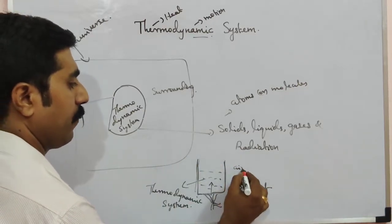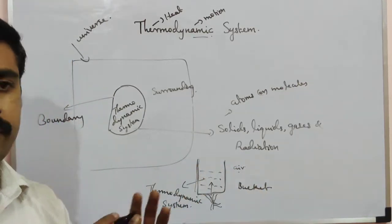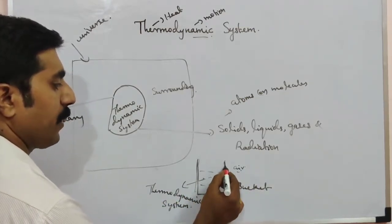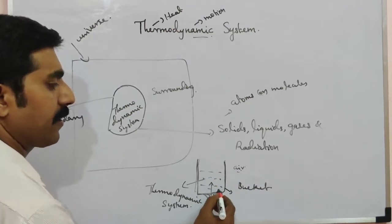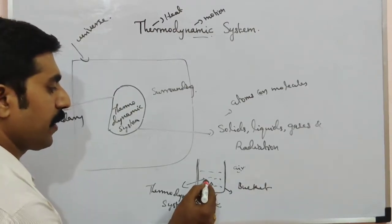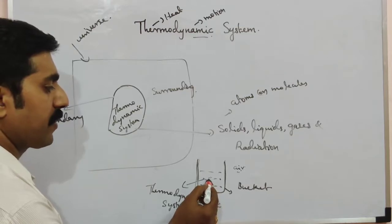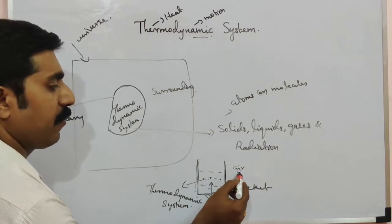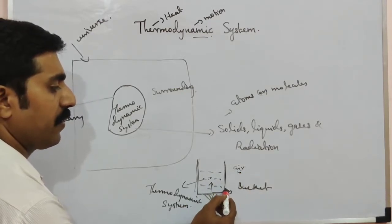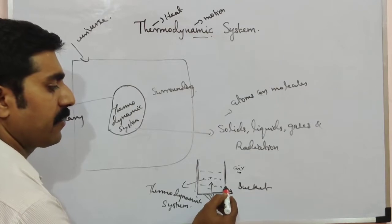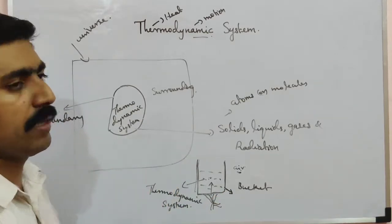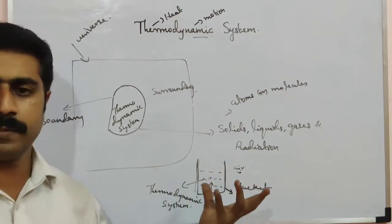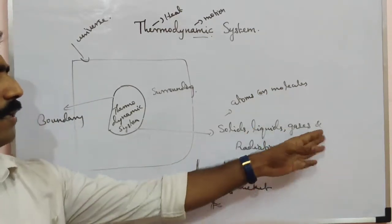The atmospheric air surrounding the system is the surrounding. There is a boundary separating the thermodynamic system from the surrounding, which is the air. For example, water in a bucket — solids, liquids, gases, and radiation can all be thermodynamic systems.